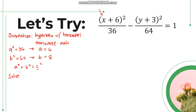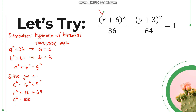To solve for c, we have a which is 6, and b which is 8. So we can write c squared equals 6 squared plus 8 squared. That gives c squared equals 36 plus 64, so c squared equals 100. Taking the square root of both sides, c is equal to 10.